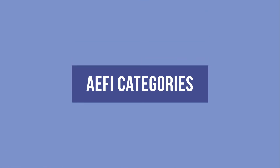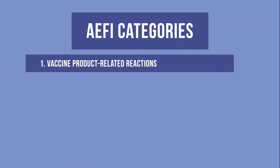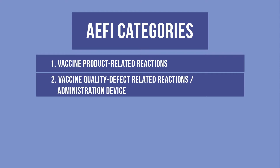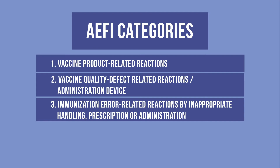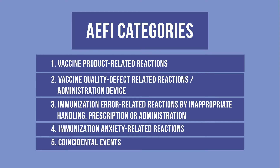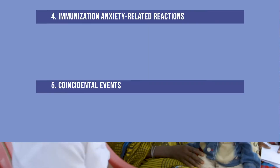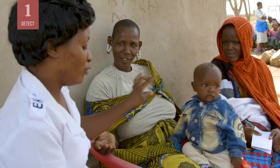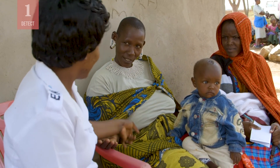Keep in mind that AEFIs are grouped into five categories. Adverse events may be related to the properties of the vaccine product itself, a quality defect of the vaccine product or the administration device, an immunization error caused by inappropriate handling, prescribing, or administration of the vaccine, and anxiety about the vaccine. Some events are coincidental and not actually related to the vaccination. You do not need to categorize an AEFI — this is done after an investigation, based on your report.